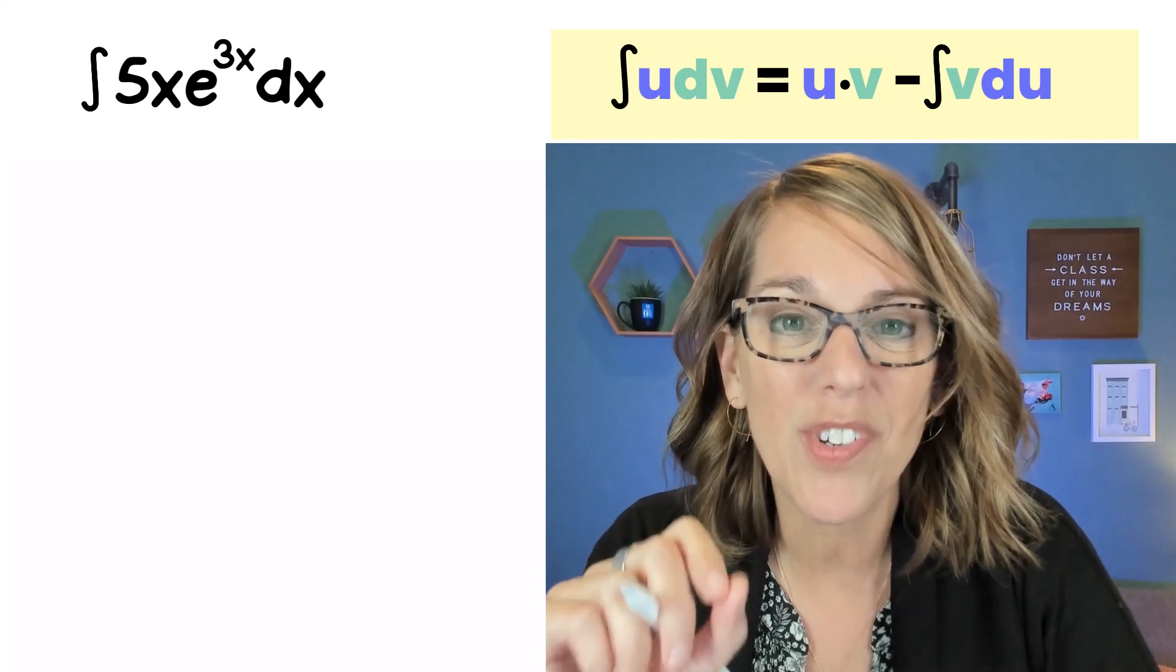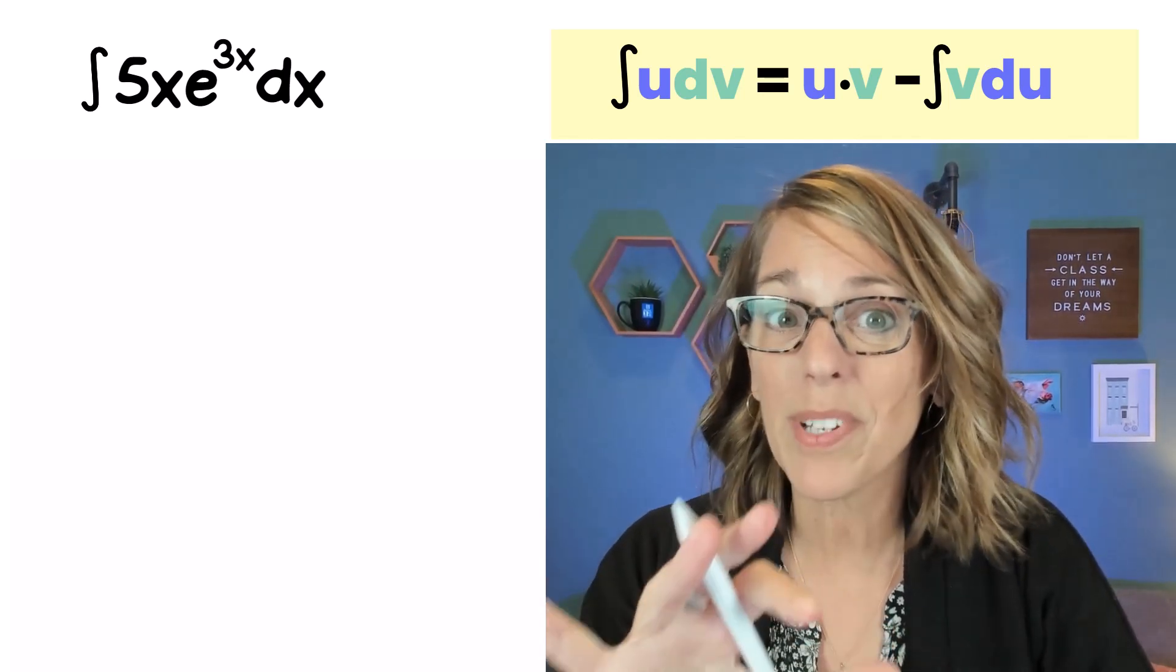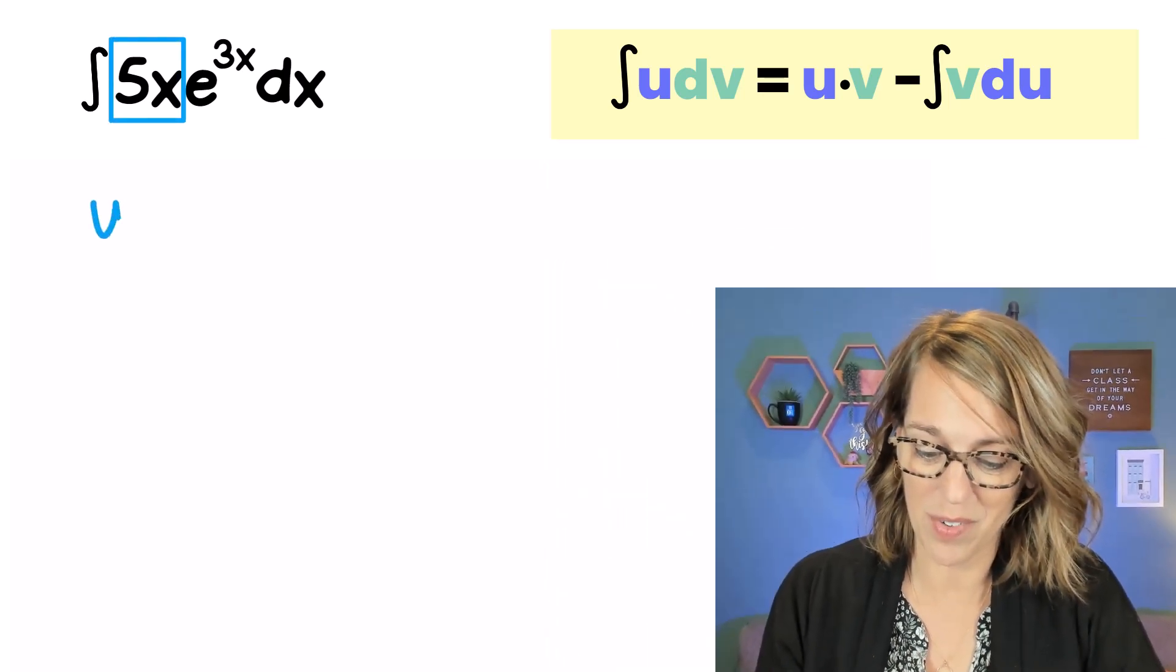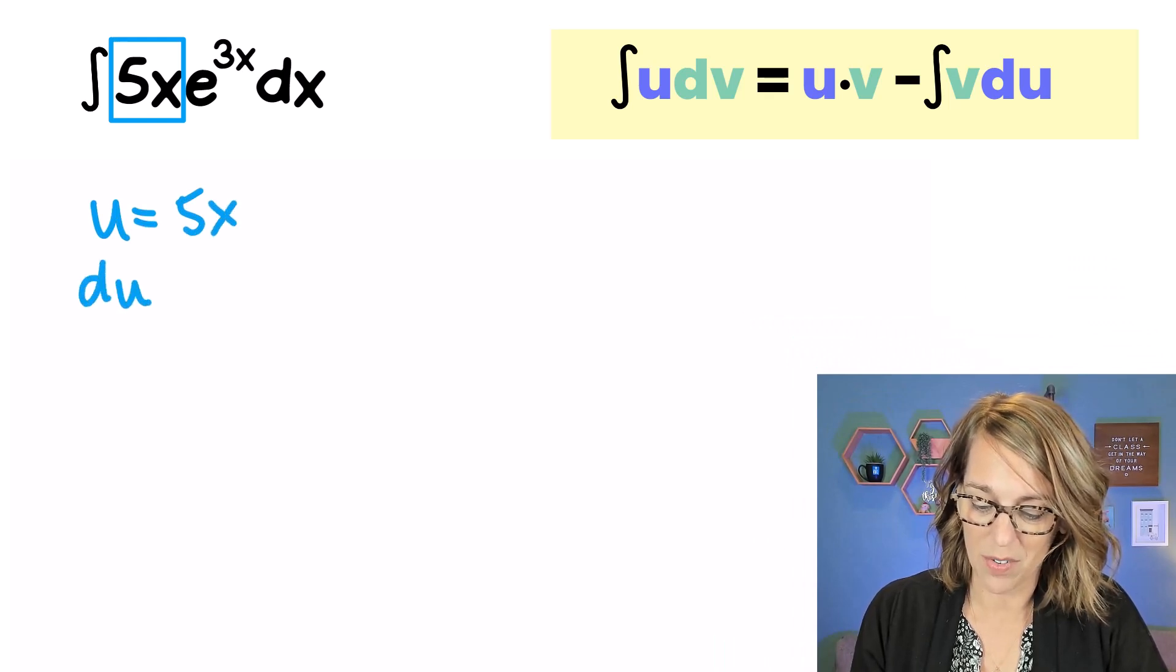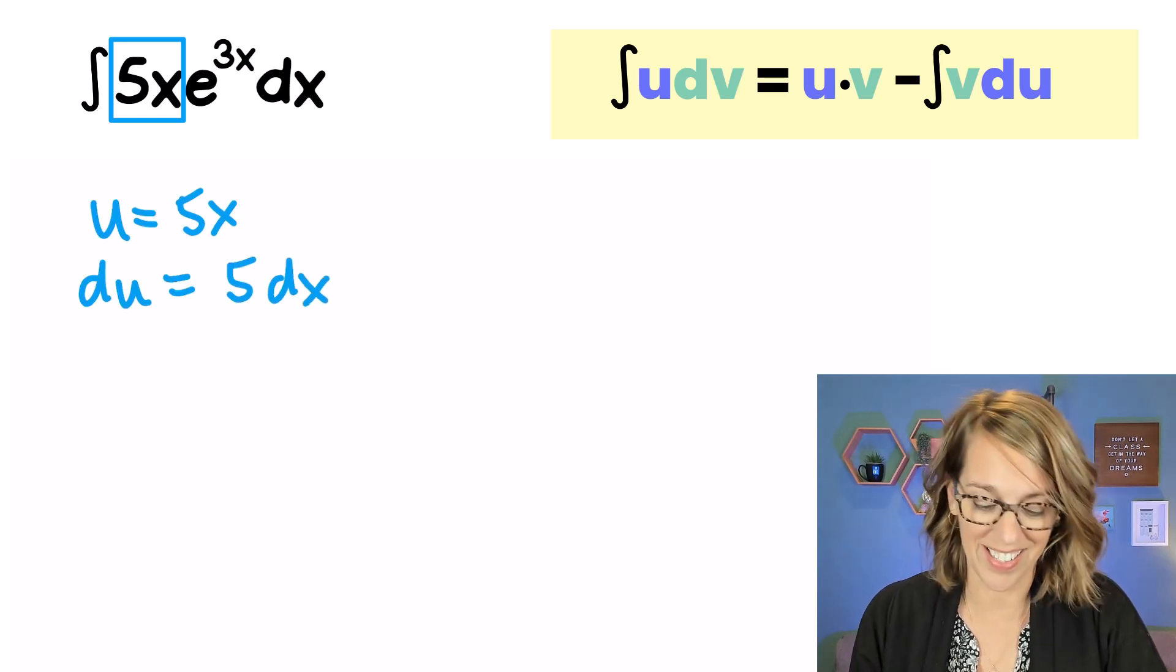In this next one, what would you choose for u? Remember, you're choosing it because it simplifies when you take the derivative. Did you choose the 5x? So u is going to equal 5x. Its derivative, du, simplifies our life. And that becomes a 5dx.